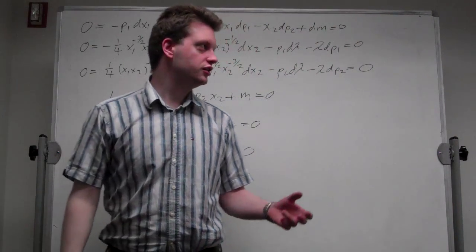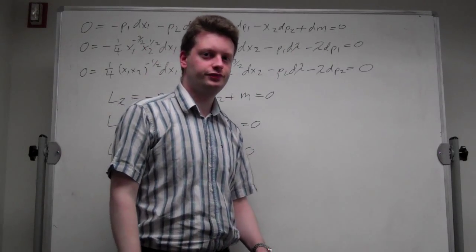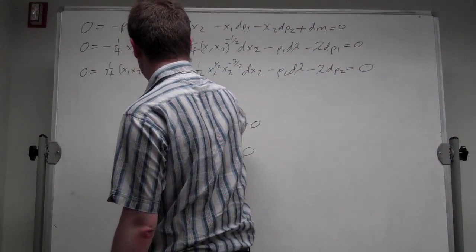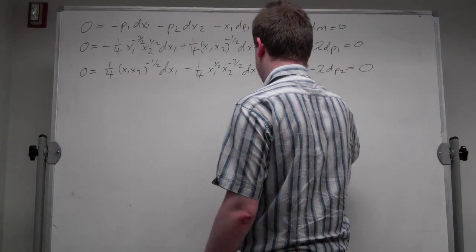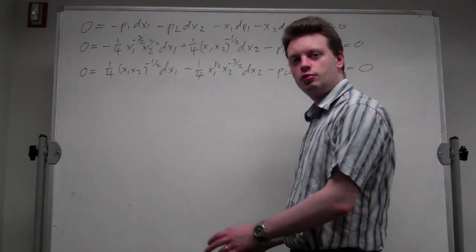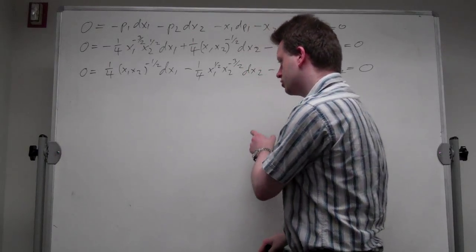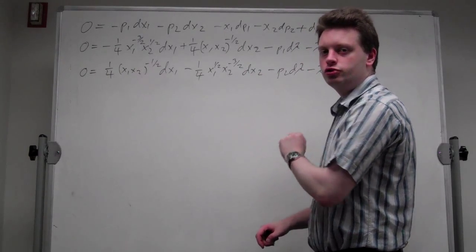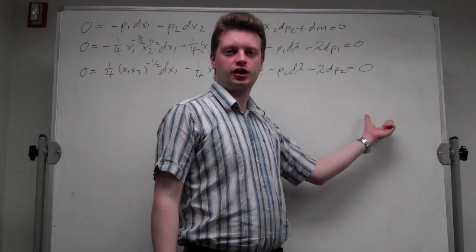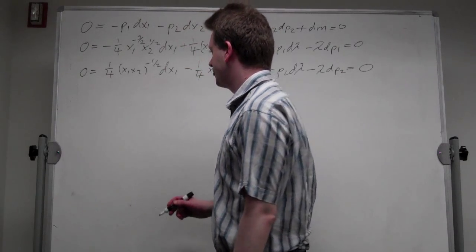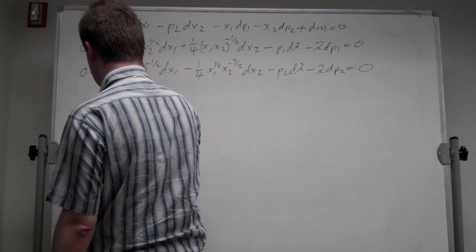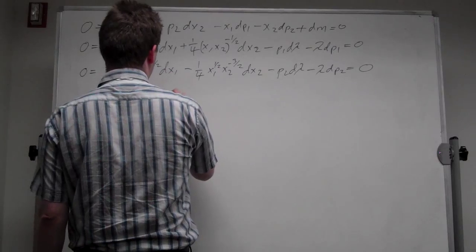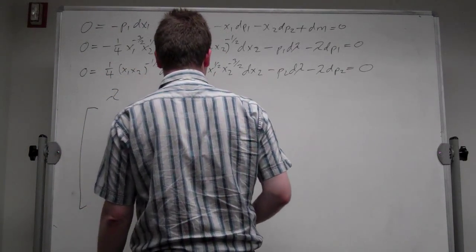Now that we have totally differentiated these equations, we need to put them in matrix form. We want a matrix on the left multiplied by the vector of endogenous variables, equal to a vector of only exogenous variables. We set up this matrix with lambda to the far left, x1 in the middle, and x2 to the right.